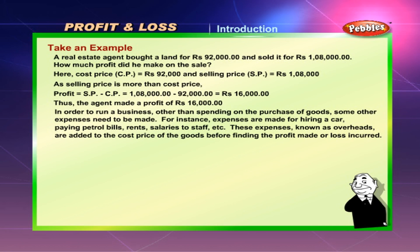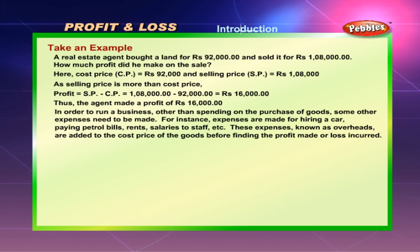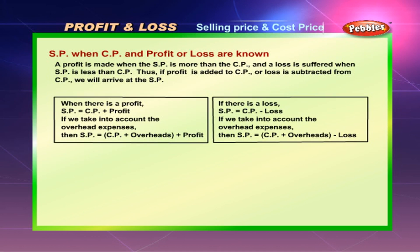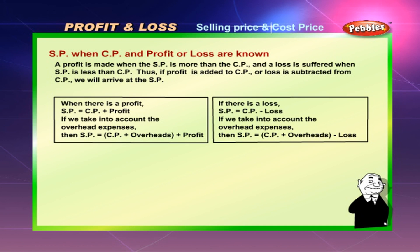In order to run a business, other than spending on the purchase of goods, some other expenses need to be made — for instance, expenses for hiring a car, paying petrol bills, rents, salaries to staff, etc. These expenses, known as overheads, are added to the cost price of the goods before finding the profit made or loss incurred.